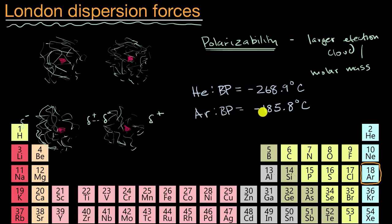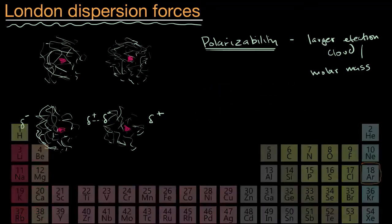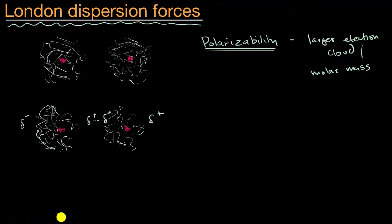That doesn't happen for argon until a good bit warmer — still cold by our standards — and that's because it takes more energy to overcome the London dispersion forces of argon, since the argon atoms have larger electron clouds. So generally speaking, the larger the molecule, because it has a larger electron cloud, it will have higher polarizability and higher London dispersion forces. But also the shape of the molecule matters — the more surface area molecules have exposed to each other, the more likely they can induce these dipoles in each other.